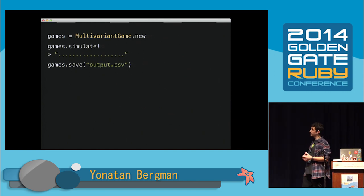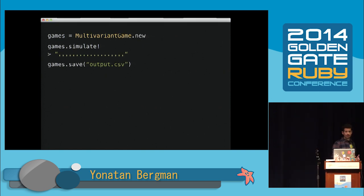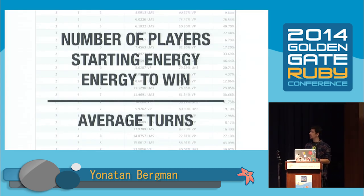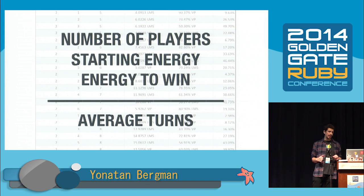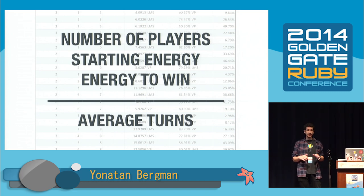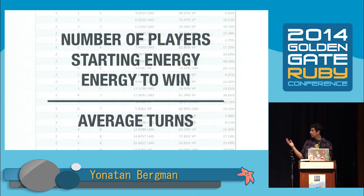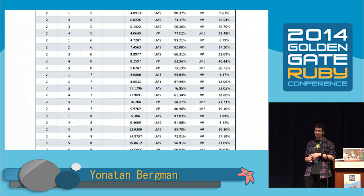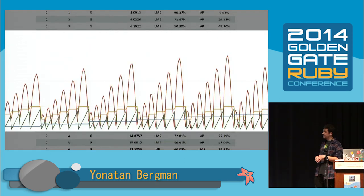I wanted to start testing the effects the number of players has on the length of the game. I created a multivariant test which ran 10,000 simulations per combination — 150 different combinations of number of players, starting energy, and energy required to win. For each combination I simulated 10,000 games, and the output was the average number of turns. This resulted in 1.5 million simulations, which took about 40 minutes and a lot of data to go over. I did what you do with big data — I put it in a chart.